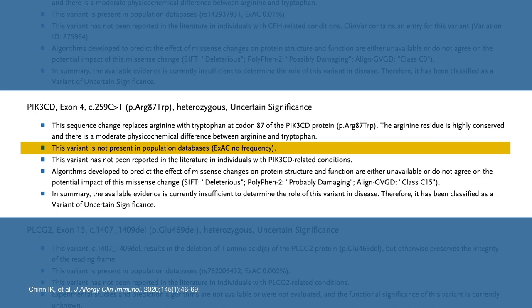The second bullet describes what is known about the frequency of the variant in the general population. This information comes from large databases such as ExAC, and now gnomAD, which have limitations but could contain genetic information from hundreds of thousands of people. If a variant is common in other people, it's likely benign because these populations are enriched for healthy individuals. If it is rare or absent, the chance of it being disease-causing is much higher. This variant has not been found in the general population, giving us another data point for pathogenicity.